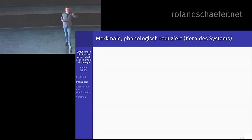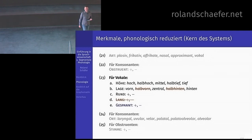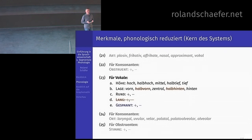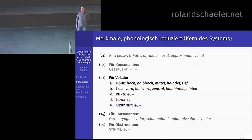Jetzt können wir das Merkmalsystem ein bisschen umgestalten. Wir führen das Merkmal »gespannt« (ja/nein) für Vokale ein. Dadurch entfallen »halb vorne« und »halb hinten«, und »lang« plus/minus fällt weg, weil das aus Gespanntheit und Betonung heraus berechnet werden kann. Das ist jetzt das neue phonologische Vokalsystem mit diesen faszinierenden Korrekturen.